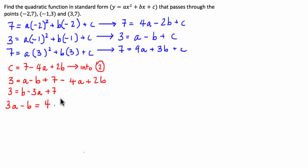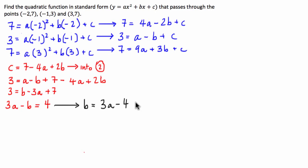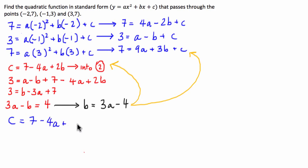Now I'm going to isolate b in this equation so I can substitute it into equation 3. Rearranging gives b = 3a - 4. From here, I'm going to substitute this into the expression for c as well. For c, substituting b = 3a - 4 into c = 7 - 4a + 2b gives us c = 7 - 4a + 2(3a - 4).